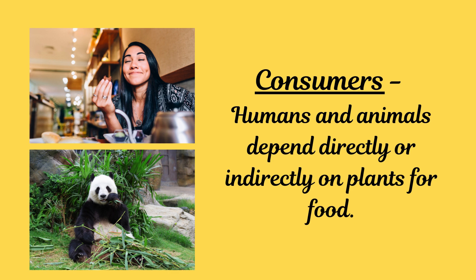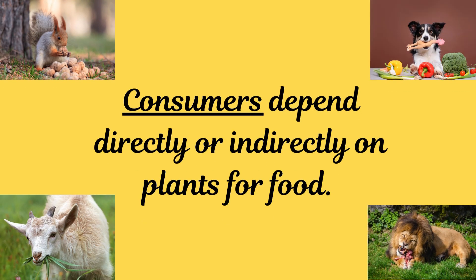All other living beings which directly depend on plants for their food, or indirectly depend on plants for their food, are called consumers. Consumers include herbivores and carnivores. As you already know, herbivores eat plants as food and carnivores in turn eat herbivores for food. So consumers consume plants either directly or indirectly.